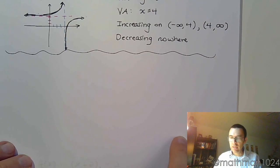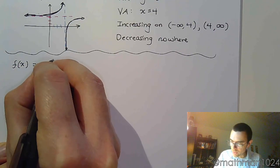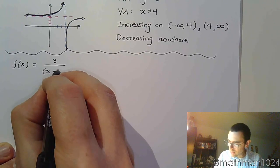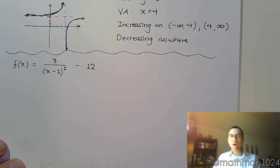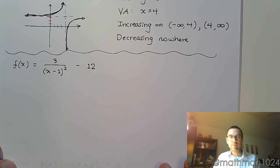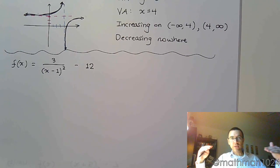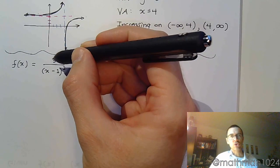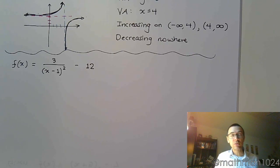Alright, we have one last example. So if f of x is equal to 3 over the quantity x minus 1 squared minus 12, what is this going to look like? Well, you see that we have a fraction, and you've got a square here on the fraction, so that tells us it's going to be that volcano shape. And since there's no negative in front of it, it's not going to turn it upside down, it's still going to be a volcano. The 3 indicates a stretch, so you're turning this volcano into an even skinnier, taller, stretched out volcano.